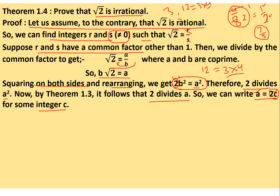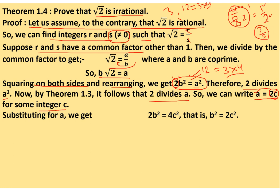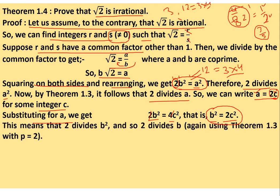Substituting a = 2c back into 2b² = a²: we get 2b² = 4c², which means b² = 2c². Now from this expression, 2 divides b² — because 2 is included in b²'s factorization. So 2 divides b². And if 2 divides b², then by the same theorem, 2 also divides b. Note: in your exam, write the full statement of the theorem, not just a theorem number.